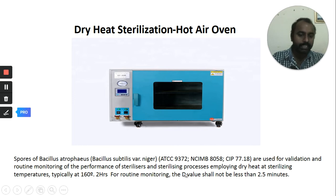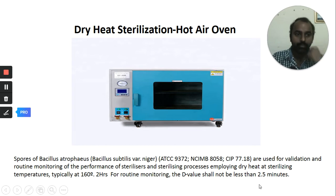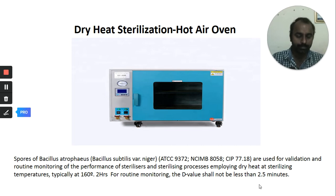To validate dry heat sterilization performance, the biological indicator used is spores of Bacillus atrophaeus (Bacillus subtilis var. niger), used for validation and routine monitoring. For a typical sterilization at 160°C for two hours, the D value should be less than 2.5 minutes — meaning a 90% or one-log reduction of microorganisms by a factor of 10. This is fundamental to dry heat sterilization.